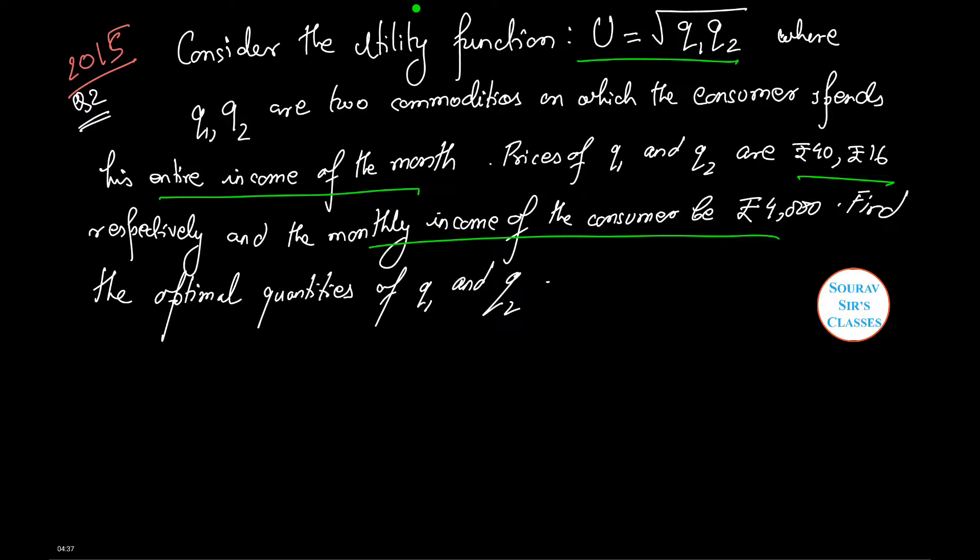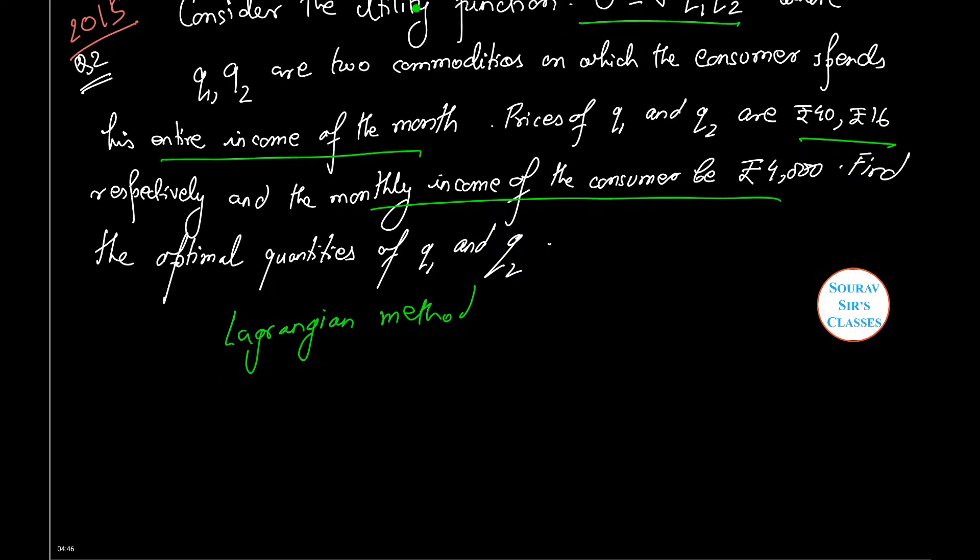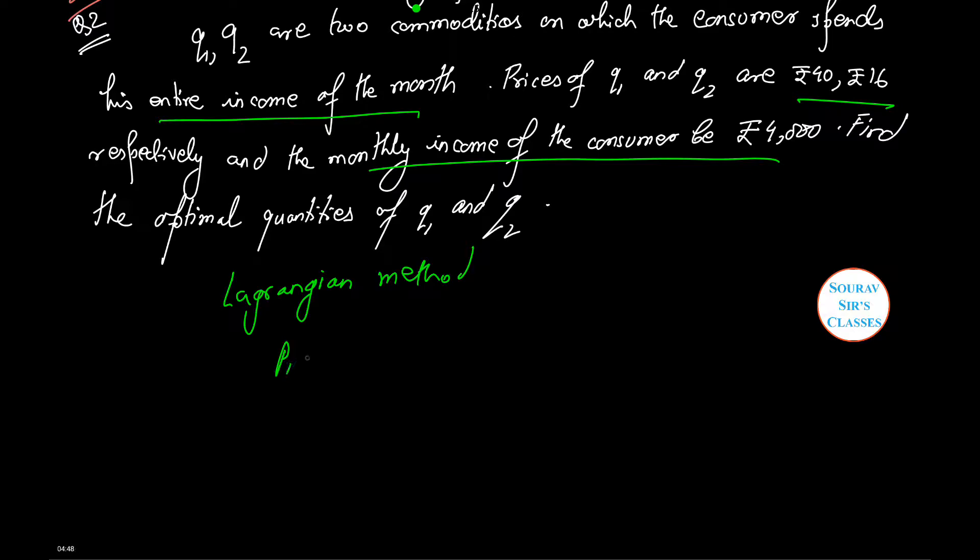Here we need to apply the Lagrangian method. Let the equation of the budget line be P1 Q1 plus P2 Q2 equals M, where M is the income.